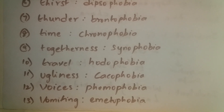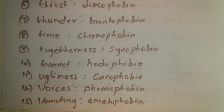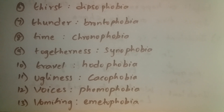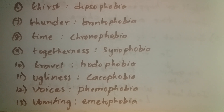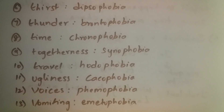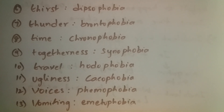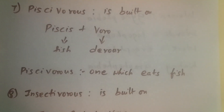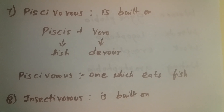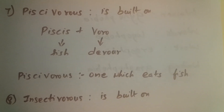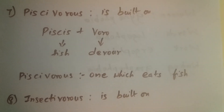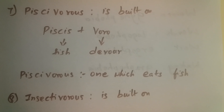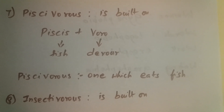If you have fear of voices, it is phonophobia. And if you have fear of vomiting, it is emetophobia. Piscivorous is built on 'piscis' plus 'oro' — 'piscis' means fish and 'oro' means devour — so piscivorous refers to animals which eat fish.